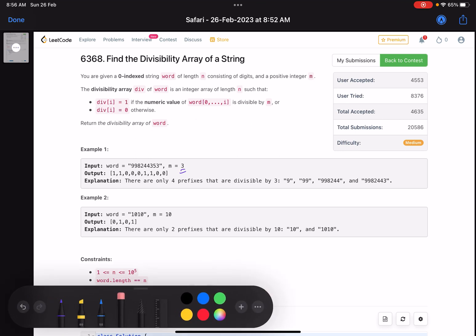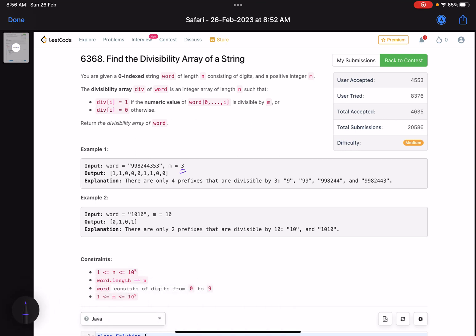Now comes the question: how do we calculate? The first thing to notice here is the length of the string can go to 10 raised to the power 5. That means a brute force approach where you keep calculating the prefix will not work. Why? Because suppose you have a 10 digit or 11 digit number, that won't fit into integer data type, and once you go beyond 18-19 digits, that won't even fit into long data type.